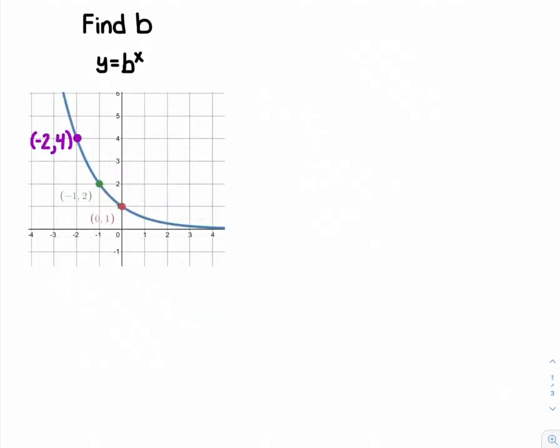In this example, to find b given the graph, start by identifying a point on the function. You can use any point, as long as you do not use (0,1).